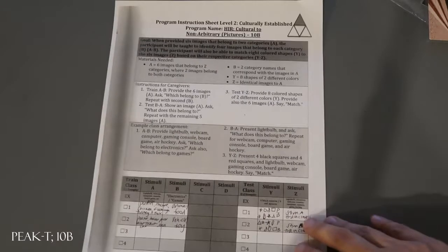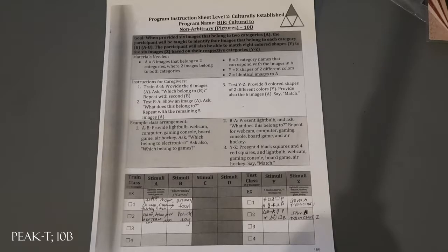So that is just a quick material sample. To look at this full-blown run-through in a demonstration and look at the scoring, you can pop over to our other video. But this is a quick material sample for PEAK Transformation Hierarchy Cultural to Non-Arbitrary Pictures 10B.